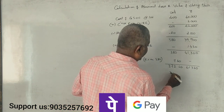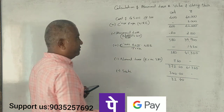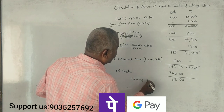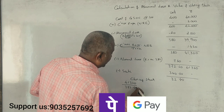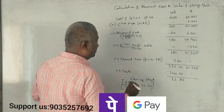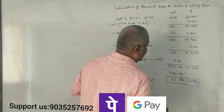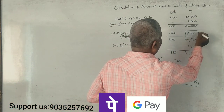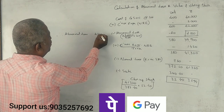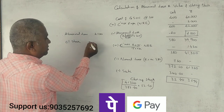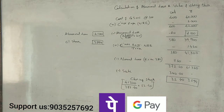340 units were sold. Closing stock is 32.4 units, valued at ₹3,594. Abnormal loss is ₹2,100. So the closing stock value is ₹3,594 and the abnormal loss value is ₹2,100. Is it clear? Yes, thank you.